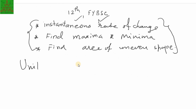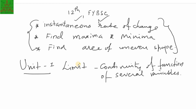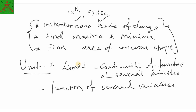In the first unit we have limits and continuity of functions of several variables. First we will give an introduction about what is a function of several variables. Functions of several variables are very important because in your surroundings everything is changing due to not only one variable — the change is happening due to many variables. For example, temperature is not only changing due to the sun; it also depends on humidity, pollution of the surrounding area, and many other variables.